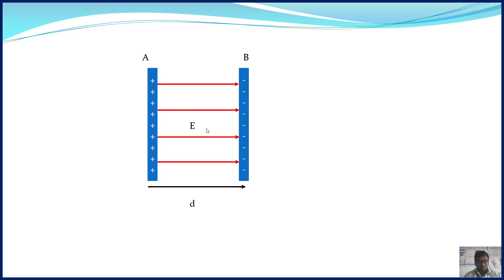Electric field is a vector quantity. The potential difference between these two plates is denoted as V. We can calculate the electric field using the potential difference and the separation between the plates.